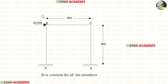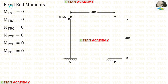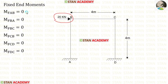This frame is a sway-type frame. Because of this nodal load, there will be sway, occurring in the direction of this load — towards the right side. Now, let us find the fixed end moments. Except for this nodal load, there are no loads in the columns and beam, so all of the fixed end moments will be zero.